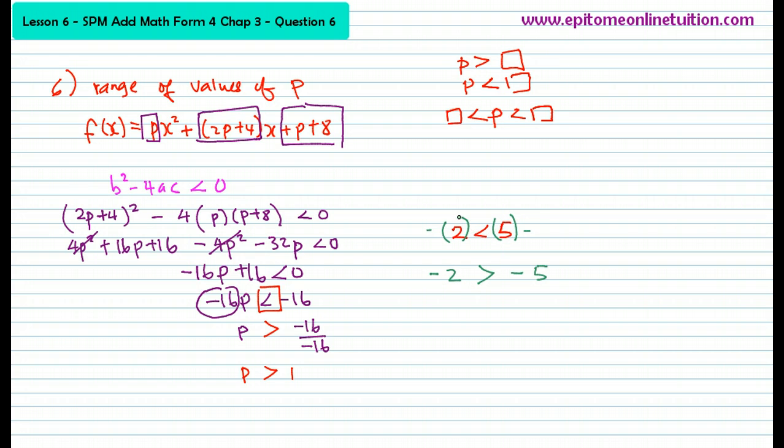So can you see now why you have to inverse the sign? Simply because when a number is smaller than another number, the value is smaller. But when you multiply it with a negative, when it becomes a negative, the smaller number is actually bigger than the bigger number. Negative 2 is actually bigger than negative 5, right? So that is why you've got to inverse the sign when you multiply or divide an inequality with a negative. Please remember that.